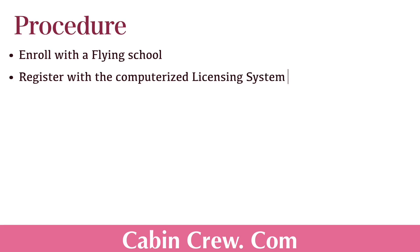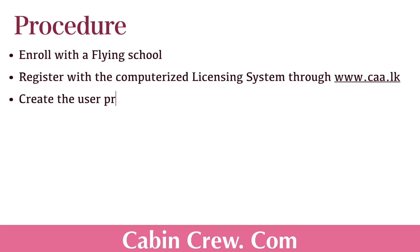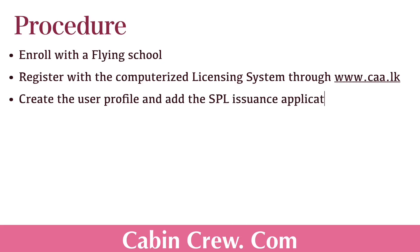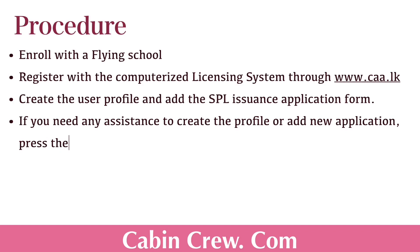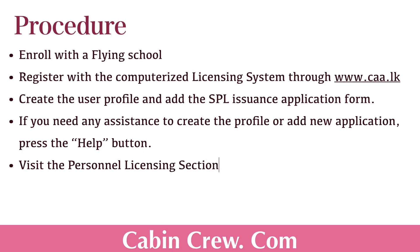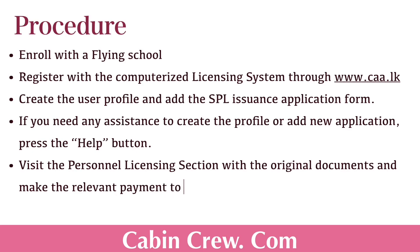The first step is to enroll with a flying school. You can check out my video on approved flying schools in Sri Lanka. Then you have to register with the computerized licensing system through www.caa.lk — the website of the Civil Aviation Authority of Sri Lanka. You then create a user profile and add the SPL issuance application form. You can also download the SPL issuance application form from the description box below. If you need any assistance creating the profile or adding a new application, press the help button on the website.